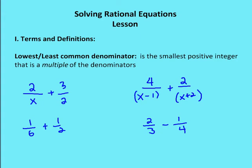Lowest or least common denominator. What is the lowest or the least common denominator? Well, it's the smallest positive integer that is a multiple of the denominators. So what does that mean? It's a whole number that is a multiple of the denominators.